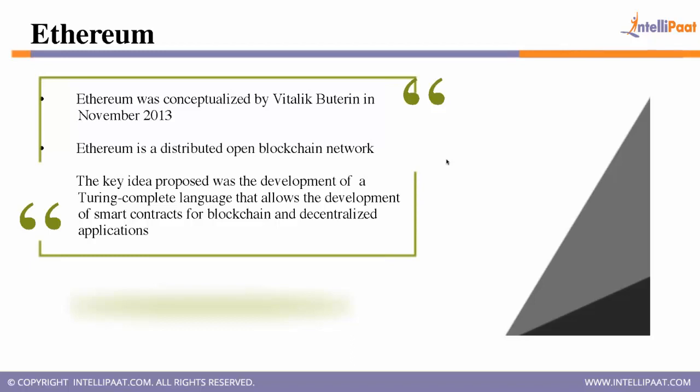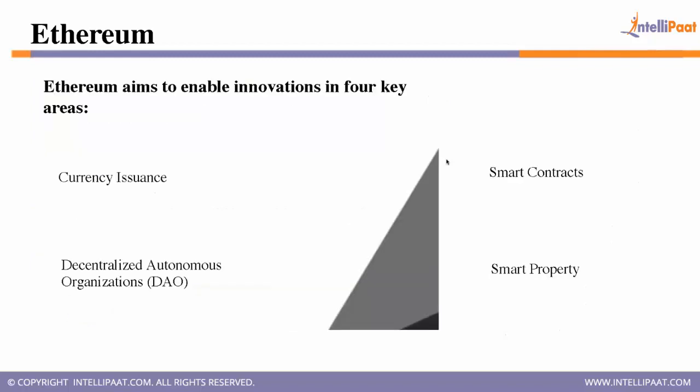Ethereum aims to enable innovations in four key areas: currency issuance, decentralized autonomous organizations (DAOs), smart contracts, and smart properties. What we are most interested in today is smart contracts. Ethereum has its own currency called Ether — all trade on this platform is done through Ether.